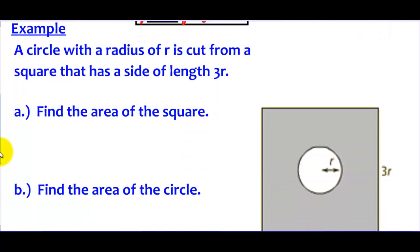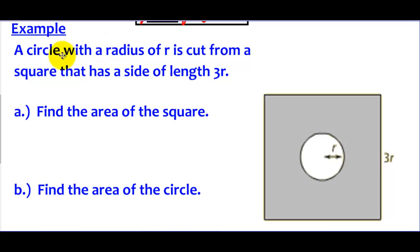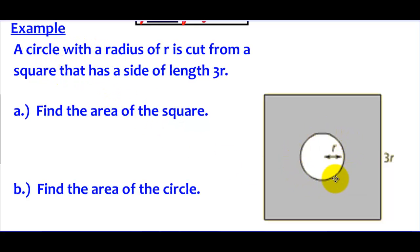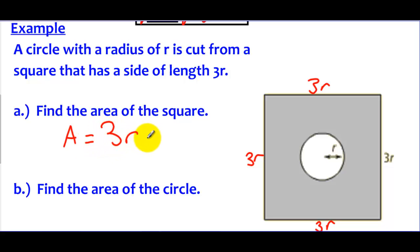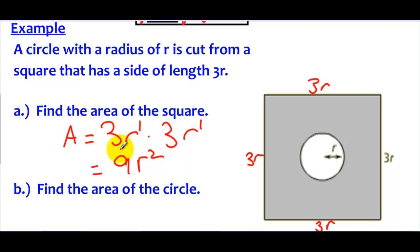We're going to apply this to multiplying and factoring polynomials. Our problem shows a square where the side has length 3r, and we're cutting a circle into it with a radius of r. To find the area of the square, we multiply length times width. Since all sides are 3r, we take 3r times 3r. Using exponent rules, 3 times 3 gives 9, and r to the first times r to the first gives r squared. So the area of the square is 9r² square units.